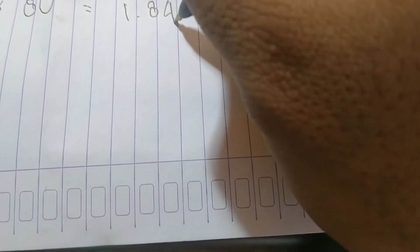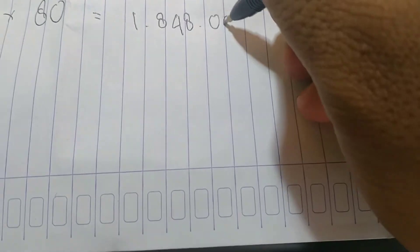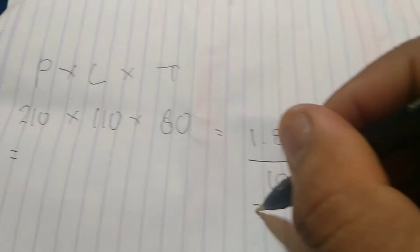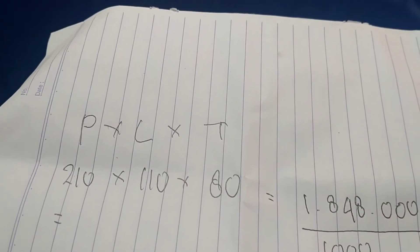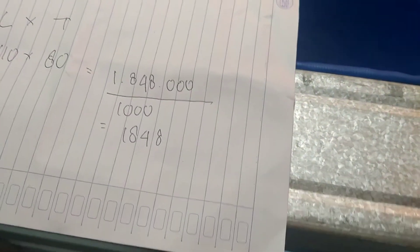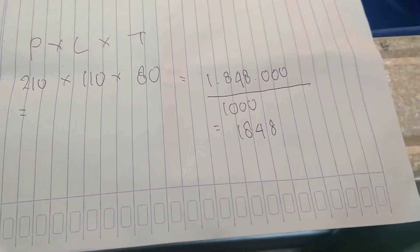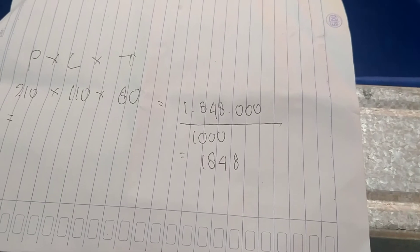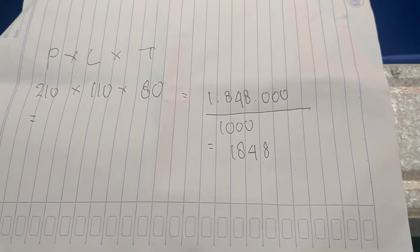Hasilnya yaitu 1.848.000 cm³. Lalu kita konversi dari cm³ ke liter dengan membagi 1000. Hasilnya yaitu 1848 liter per jam. Ini adalah kebutuhan pompa untuk kolam saya.